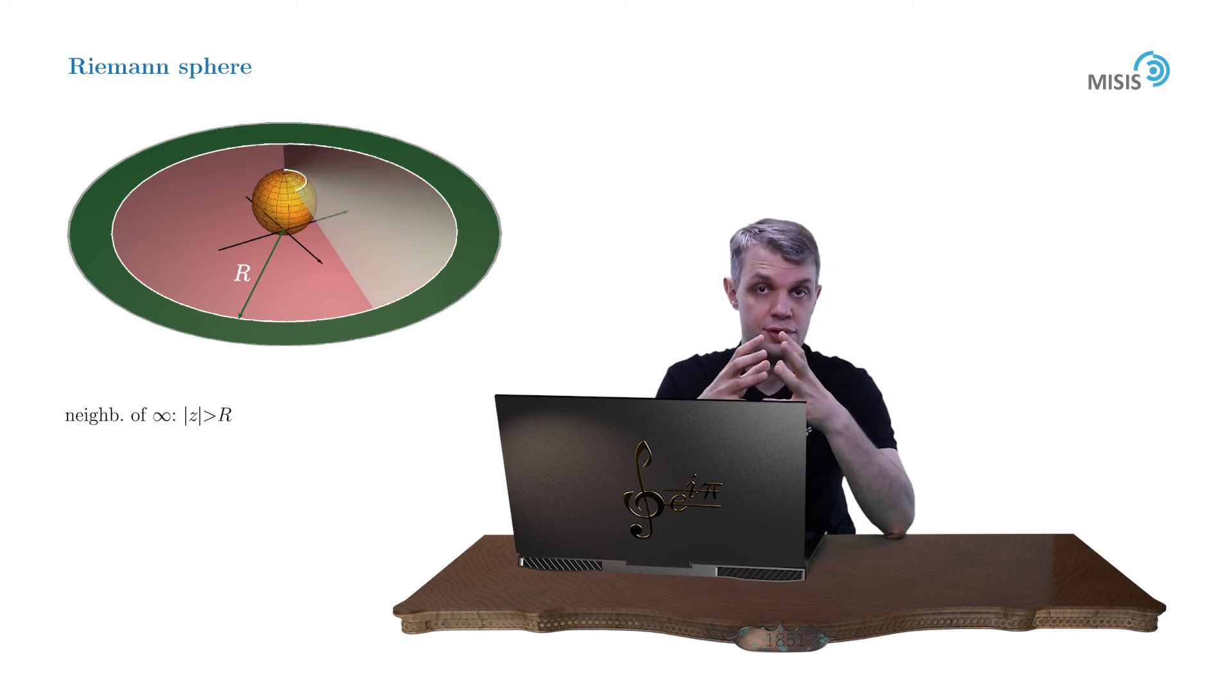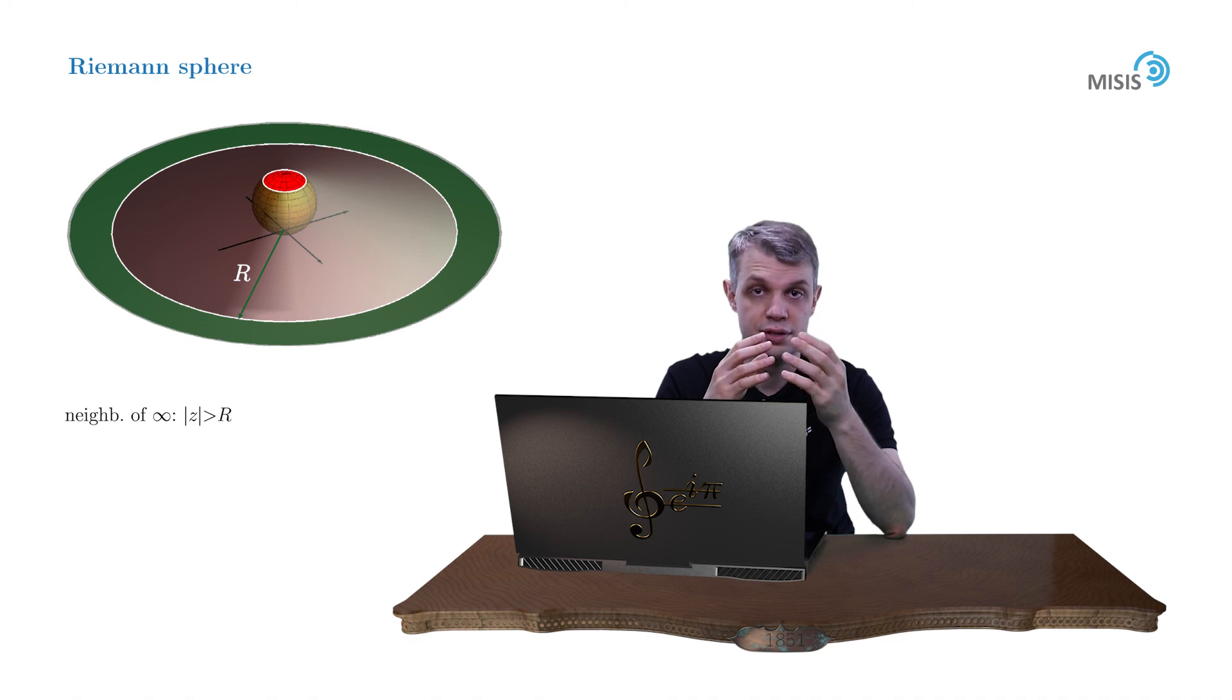But if you make a projection of this region onto a Riemann sphere, you will immediately see that it is an interior of a circle surrounding the north pole. All other definitions of limits, connectedness are translated onto a Riemann sphere without any change.